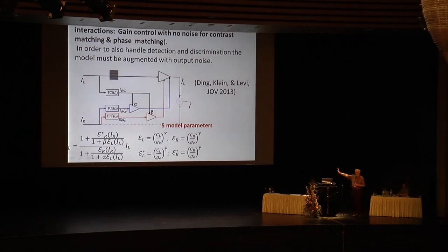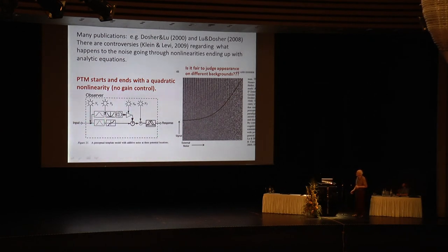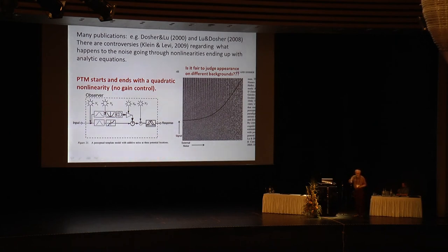This approach explains everything just in terms of non-linearities, with noise coming at the very end. The opposite theory is Docher and Lu, where there is a non-linearity first — a quadratic — that goes through the system forever with no change, no gain control in the denominator, and no multiplicative noise. On the horizontal axis is different amounts of external mask or external noise; on the vertical axis it's changing the signal, and as the noise increases, the appearance disappears.